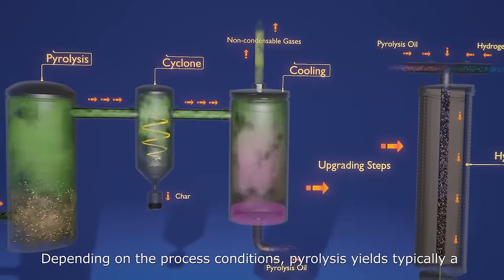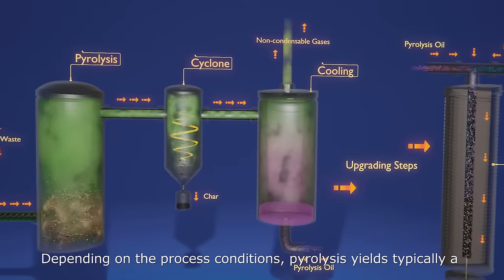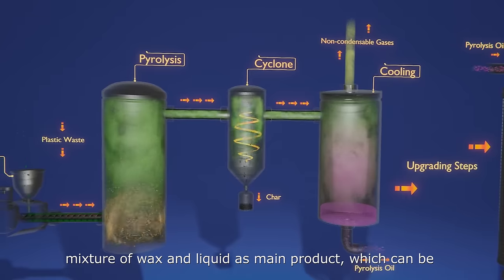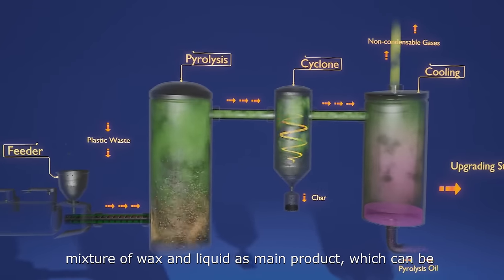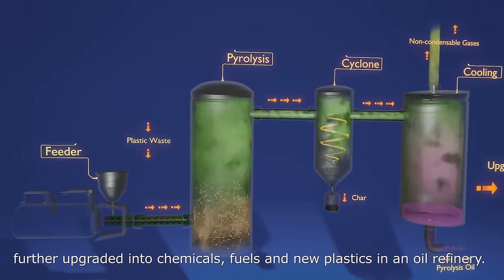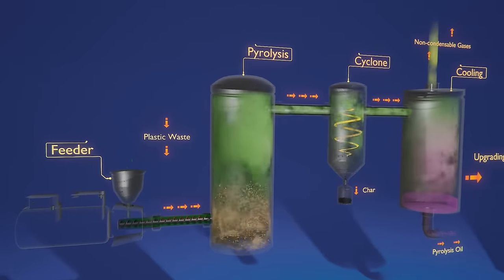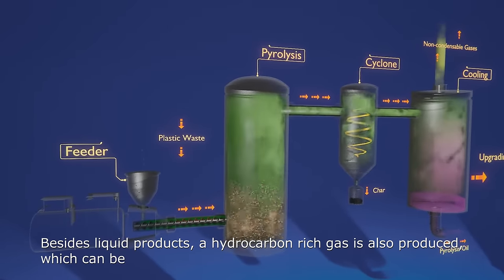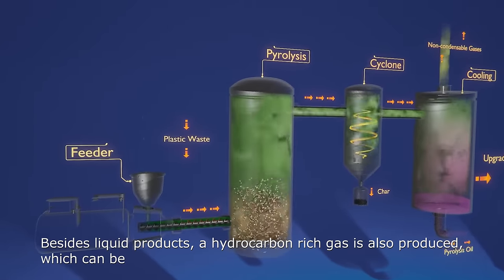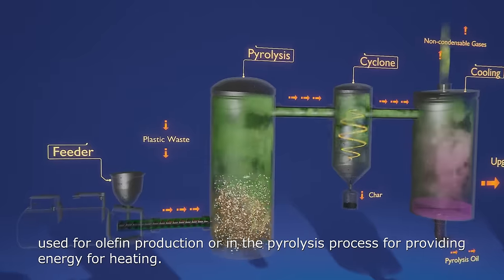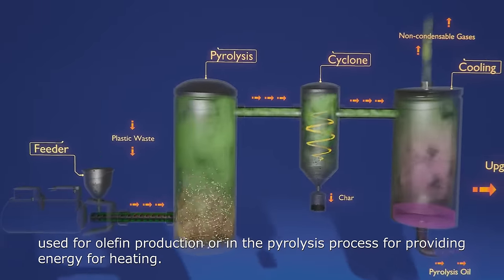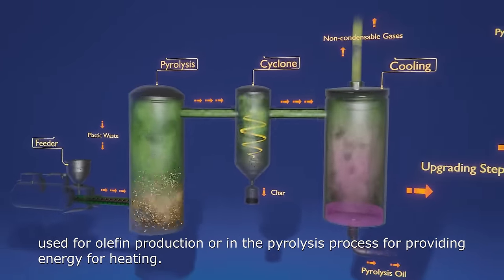Depending on the process conditions, pyrolysis yields typically a mixture of wax and liquid as a main product, which can be further upgraded into chemicals, fuels, and new plastics in an oil refinery. Besides liquid products, a hydrocarbon-rich gas is also produced, which can be used for olefin production or in the pyrolysis process for providing energy for heating.